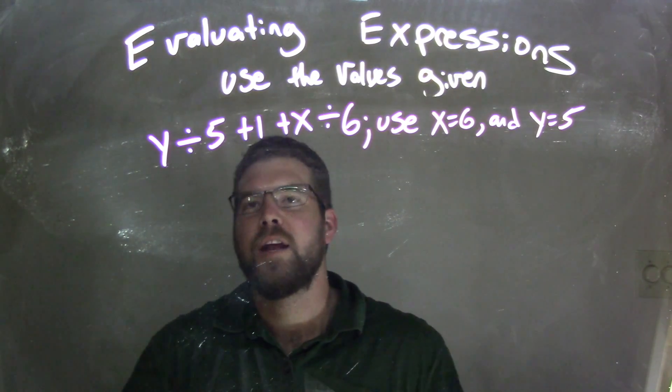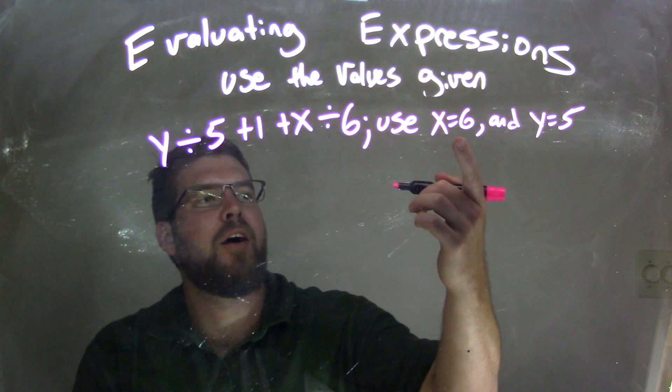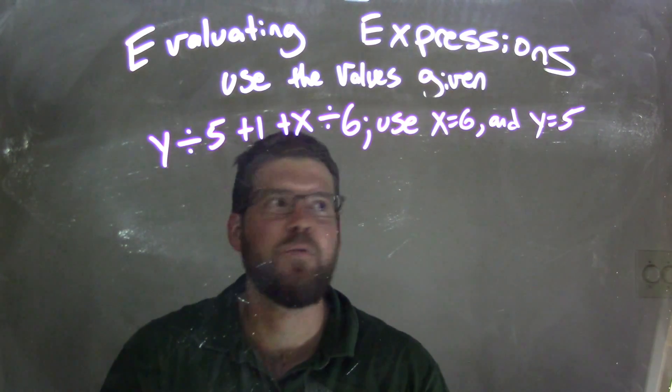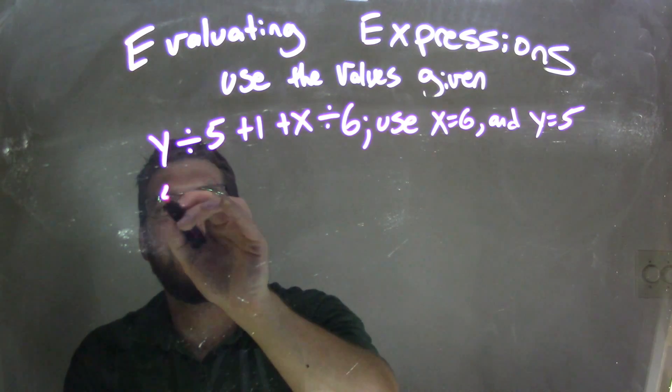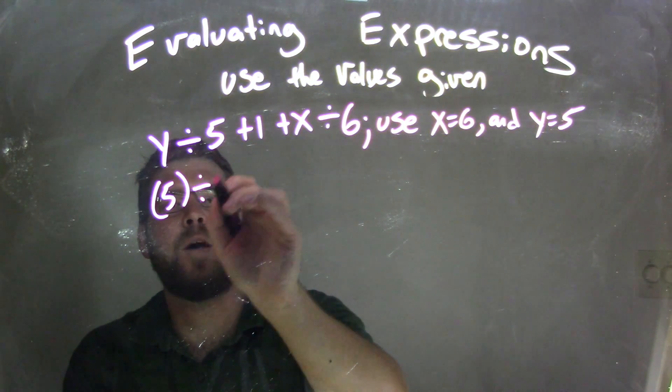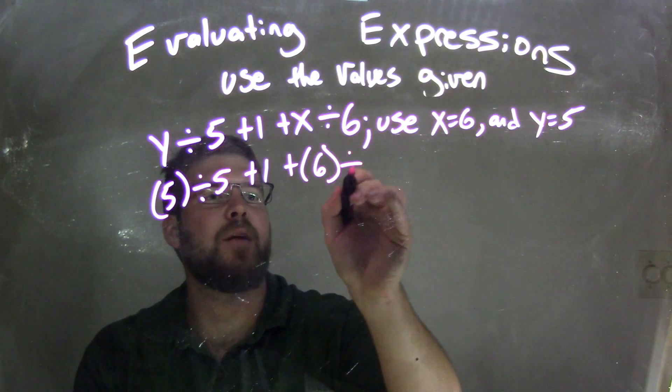Well, y divided by 5 plus 1 plus x divided by 6, we need to plug in our x equals 6 and y equals 5. If x is 6 first, so that goes in here, and y is 5, so this y here is 5 divided by 5, plus 1, plus x which is 6, divided by 6.